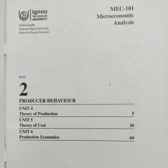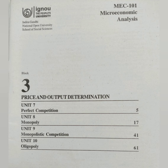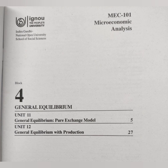Moving forward, block 3 is price and output determination. In this block, we will learn how firms take their profit maximization decision in different forms of market. In particular, we will learn about perfect competition and monopoly in depth.